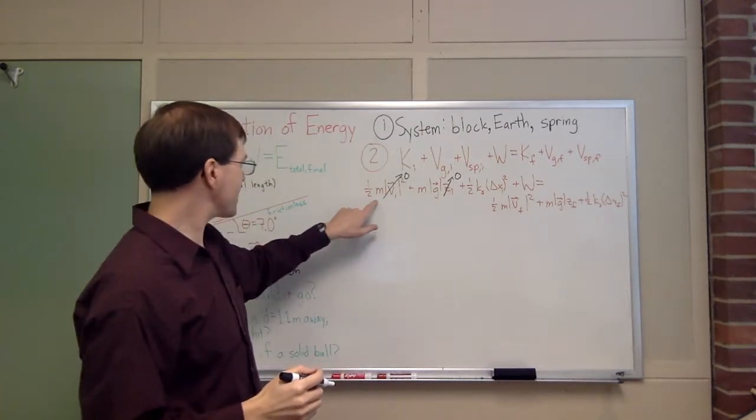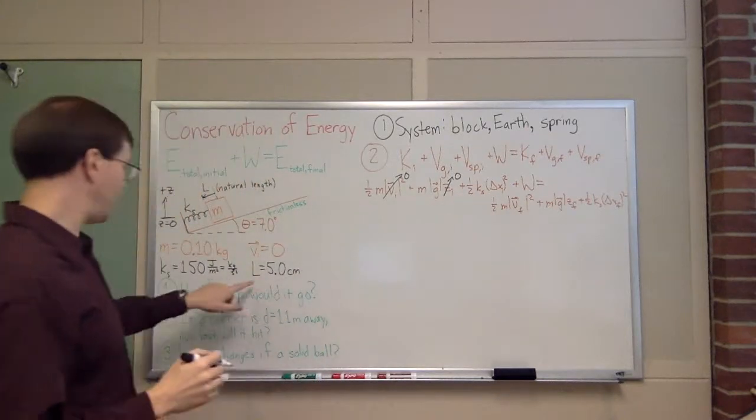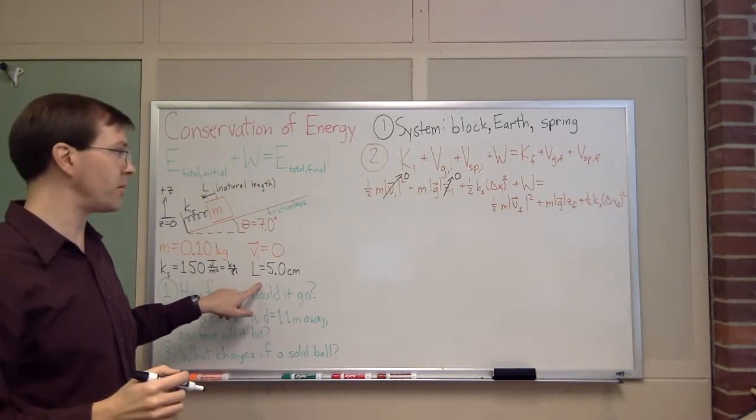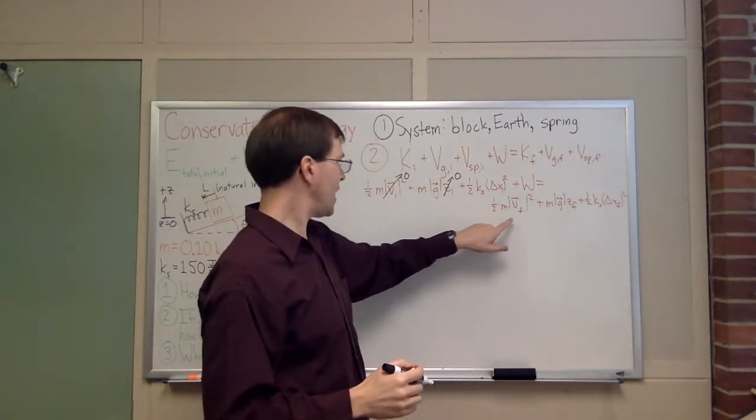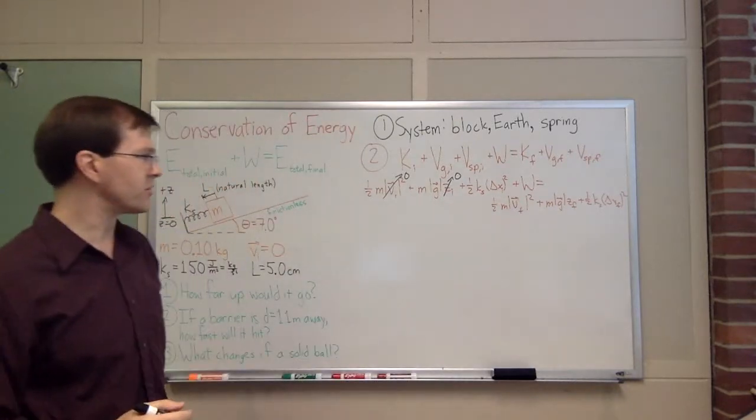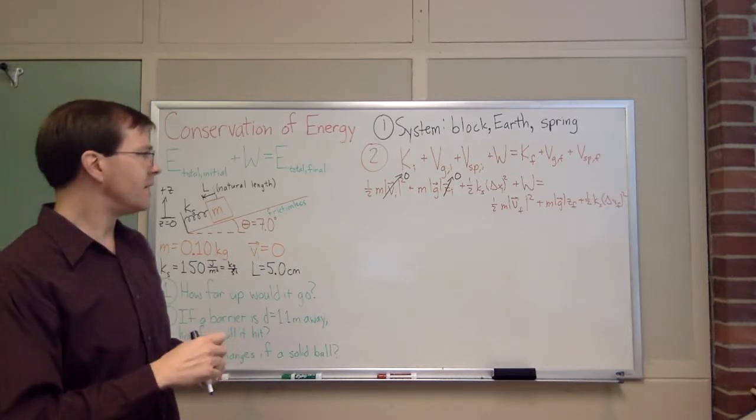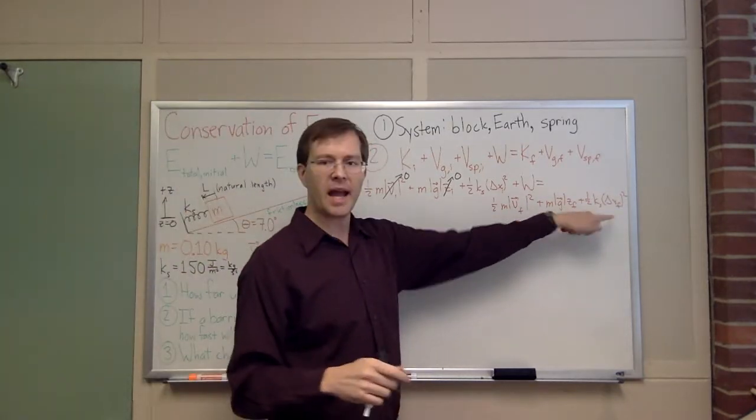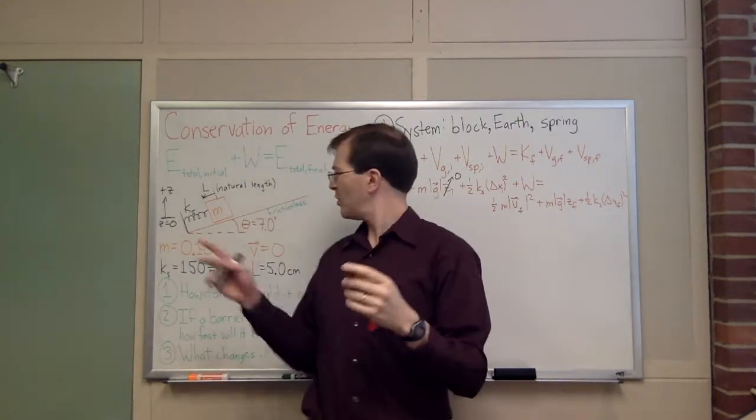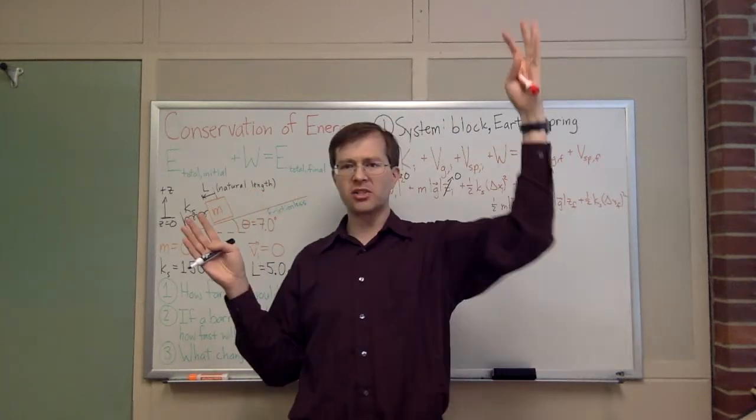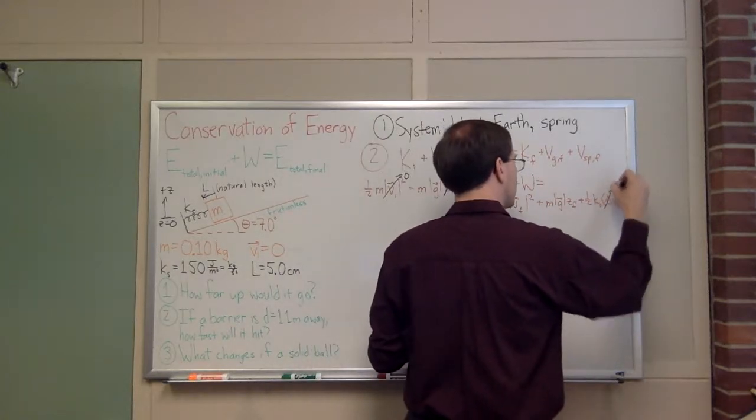k spring, mass is known, g is known, k spring is known, delta x initial is known. That's my L. My initial compression of the spring compared to the natural length is five centimeters. We'll talk about work in a second. Delta x final, the spring, after the block has sprung off into the distance, how compressed is that spring? Hopefully not at all. Hopefully once the block has shot off, the spring will return to its natural length, naturally. So this delta x final is going to be zero.